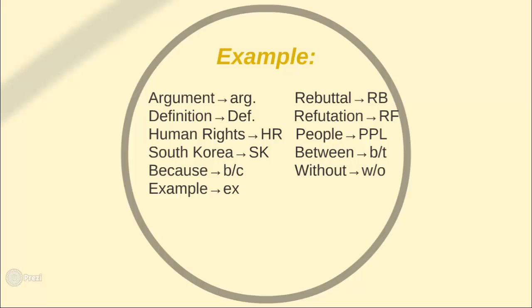We have some words such as argument and definition, where we use only the first three letters. We have rebuttal, refutation, people, human rights, South Korea — which are abbreviations: RB, RF, PPL, HR, SK. I prefer using the slash: B-slash-C for because, B-slash-T for between, B-slash-for for before. By creating your own set of shorthand, you'll begin writing faster, listening better, and taking stronger notes.